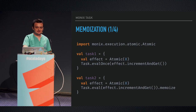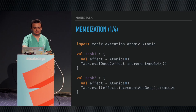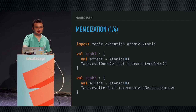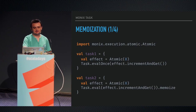Memoization is something that task does really well. Eval-once behaves like a lazy val — eval-once of increment-and-get will only increment that value once, then cache the result and serve it for subsequent invocations. Eval will trigger that evaluation every time.